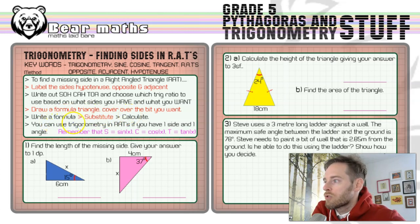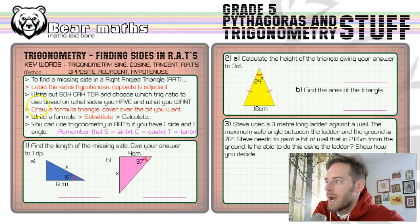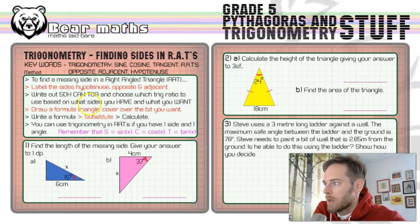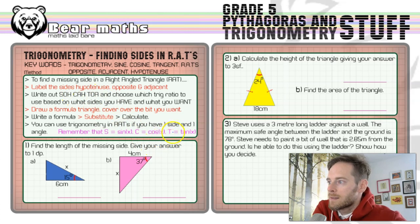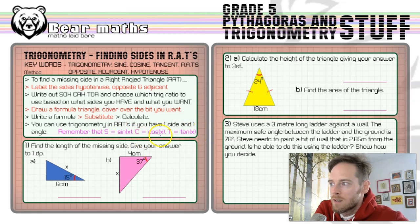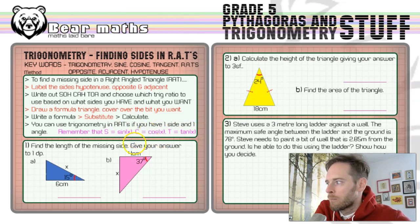You can use trigonometry in right-angled triangles if you have one side and one angle. Remember, this is really key: S in SOHCAHTOA stands for sine of the angle, C stands for cos of the angle, and T stands for tan of the angle. They are not just sine, cos, and tan — they are of the angle, multiplied by the angle.